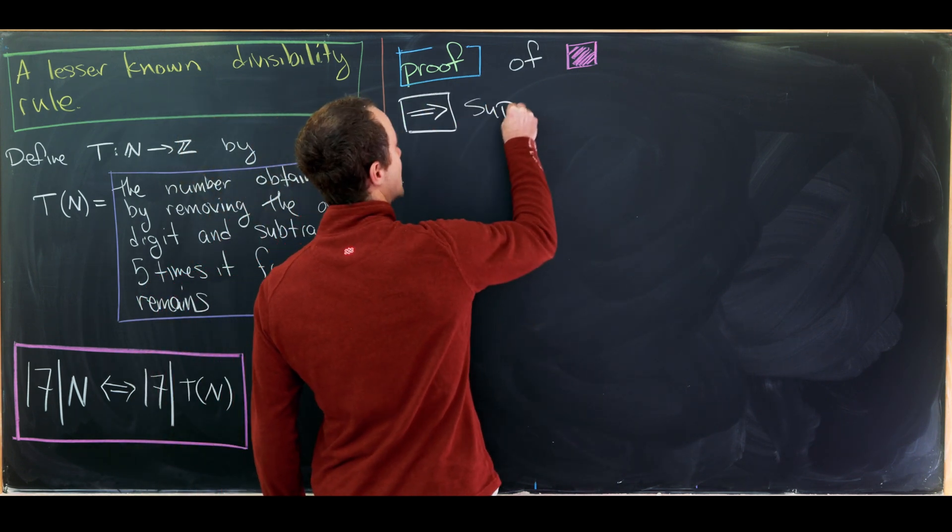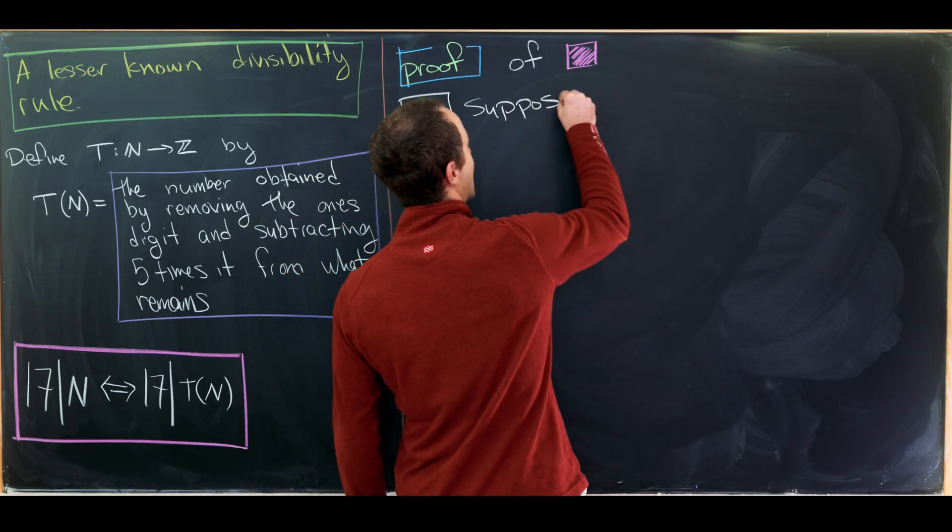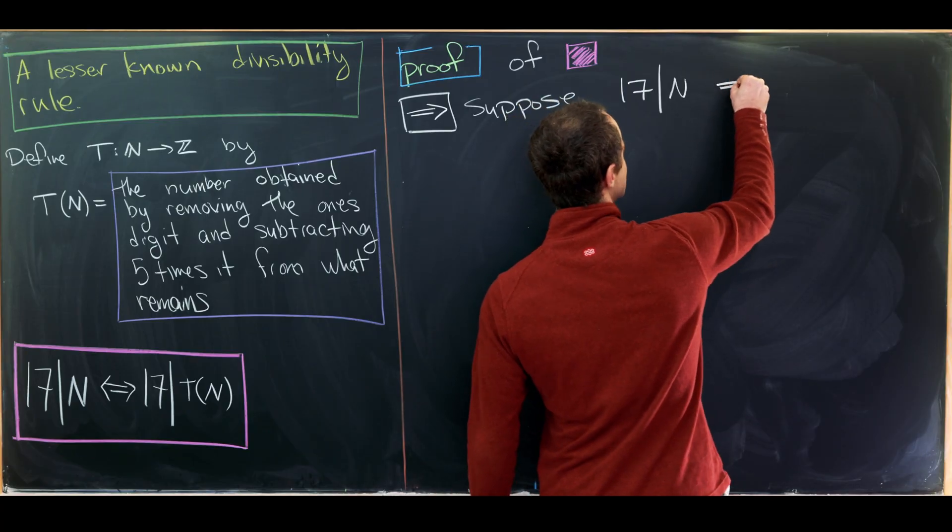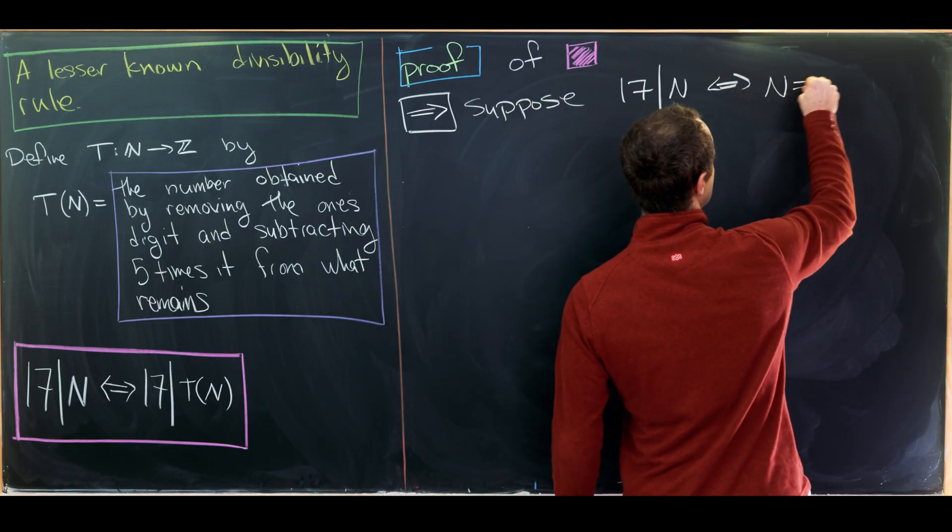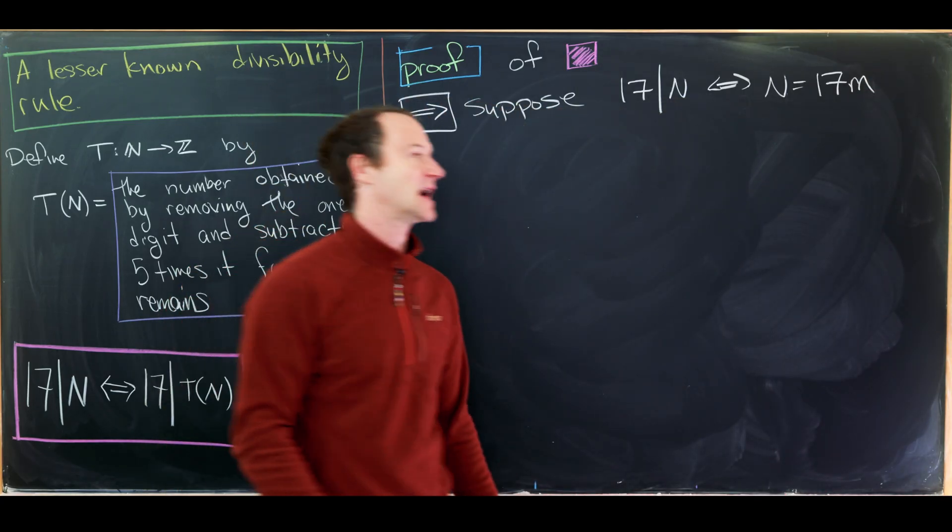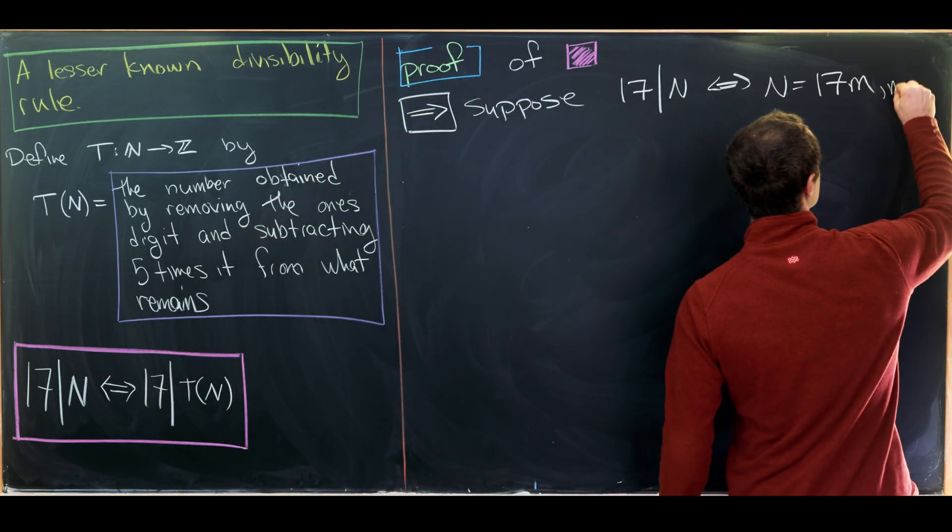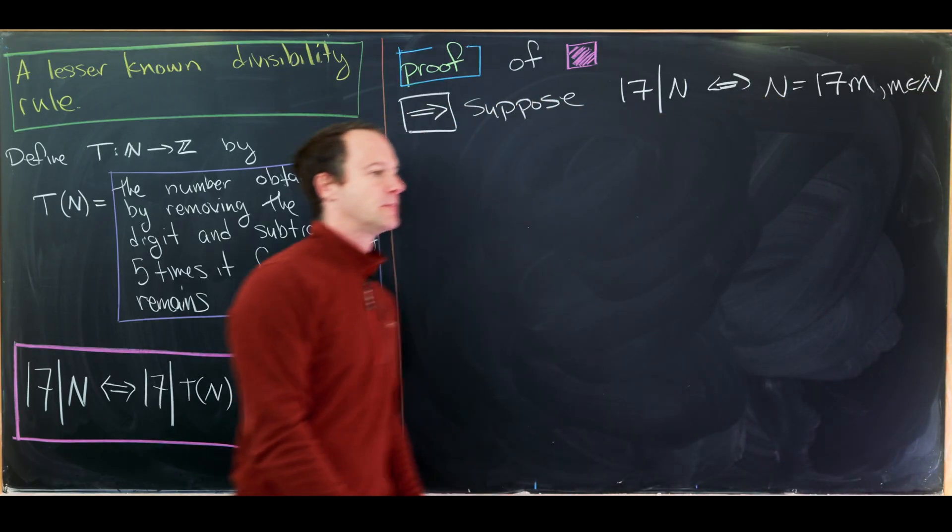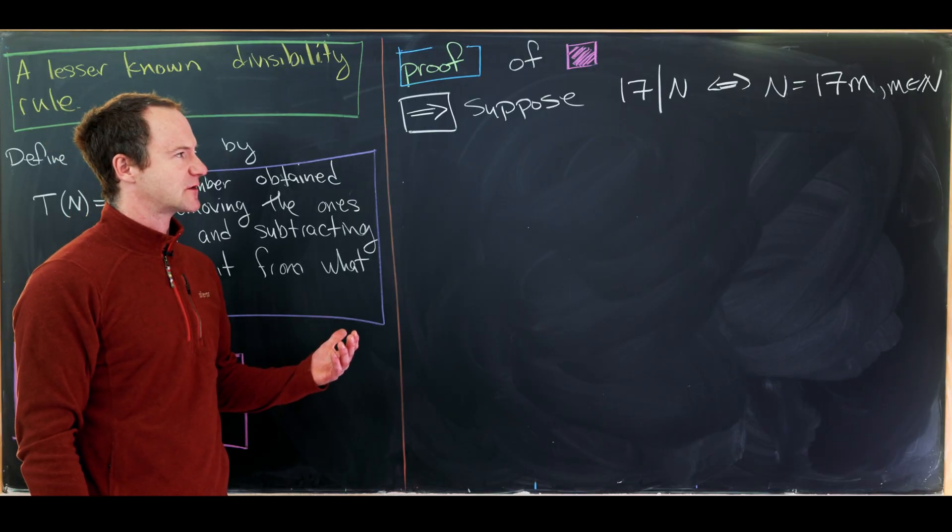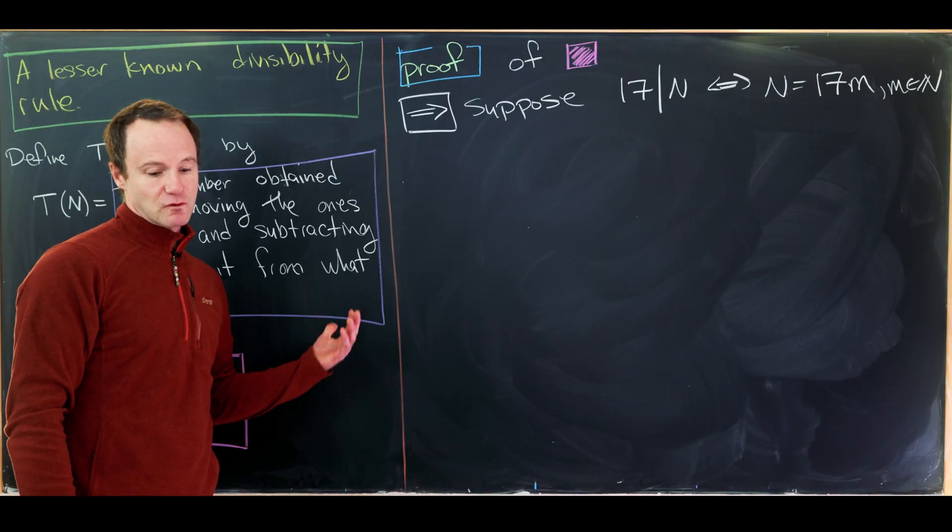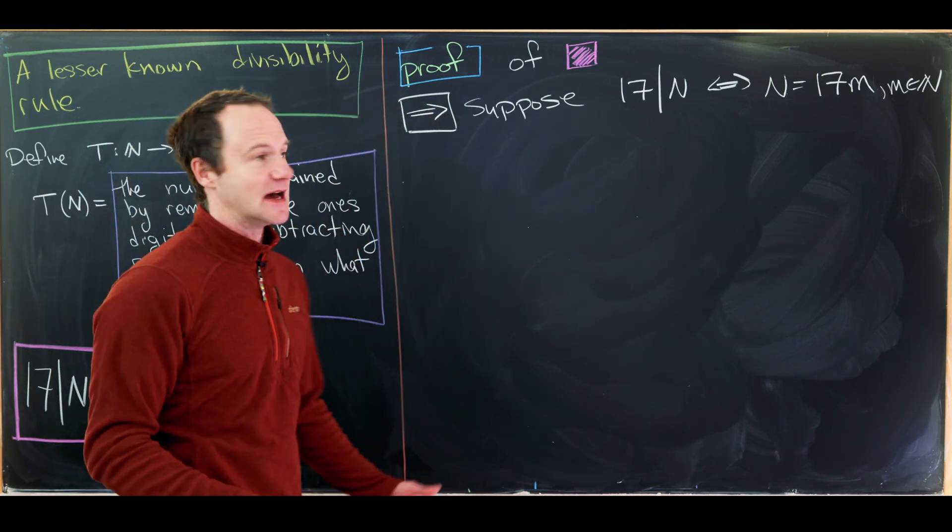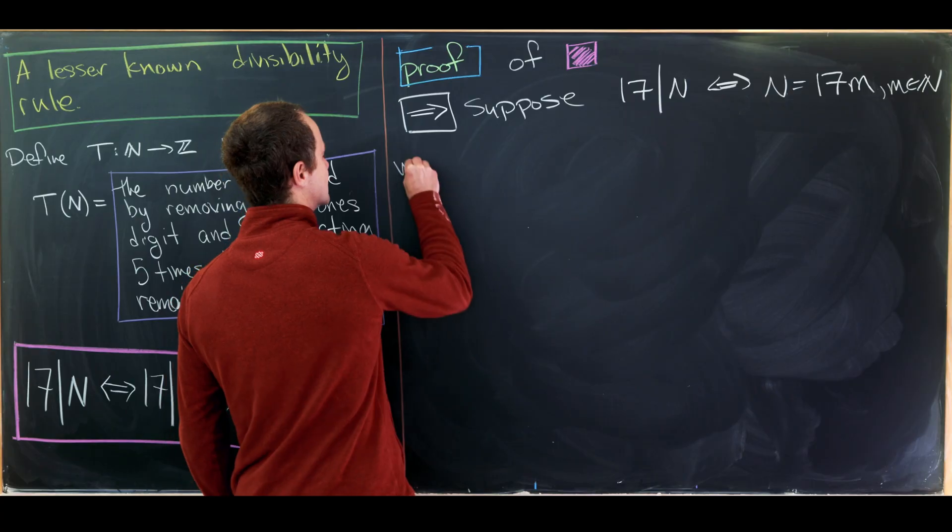So let's suppose that 17 divides n. So what does that mean? That's the same thing as saying that n is a multiple of 17. So we could perhaps write it as 17 times m, where little m is a natural number. And now let's do our transformation. But in order to do our transformation, we'd like to write n in a certain format so that we can do this action nice and efficiently. So let's do this.